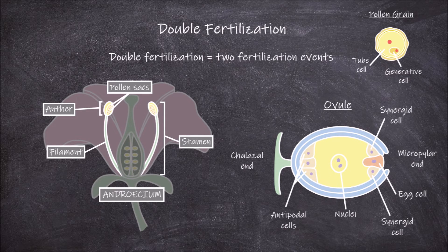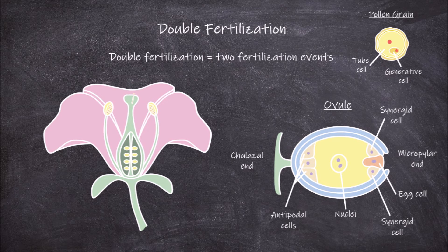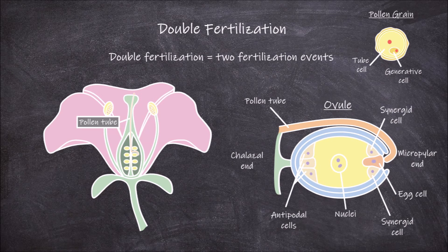The process of double fertilization starts when a pollen grain lands or gets deposited onto the stigma. The pollen then germinates under the right conditions. The tube cell then grows down through the stigma, down the style, through the ovary, and then into the ovule through the micropyle. This growth of the tube towards the micropylar part of the embryo sac is guided by chemicals secreted by the synergid cells also present near the micropyle.